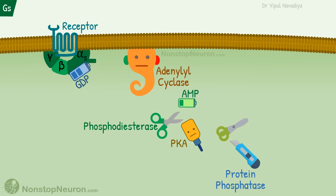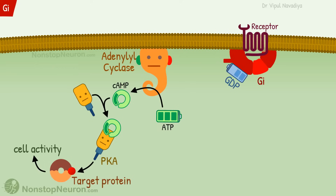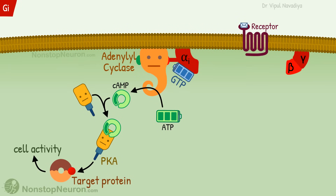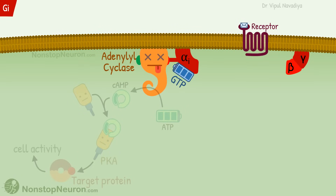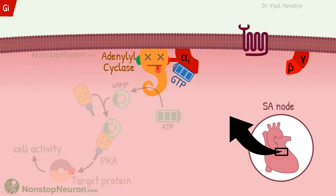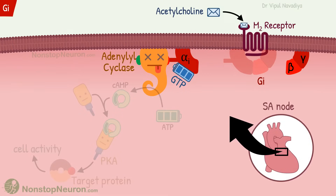Now let's talk about the Gi protein. It has an alpha-i and beta and gamma subunits. These subunits follow a similar path as Gs proteins — binding of ligand causes release of GDP, binding of GTP, and then dissociation of the alpha subunit. Now, instead of stimulating, alpha-i inhibits adenylyl cyclase. So all the things that were happening at a baseline rate stop happening, and the activity of the cell decreases. As an example, the SA node contains M2 receptors, which are Gi protein-coupled receptors. Acetylcholine activates this receptor and inhibits adenylyl cyclase activity, ultimately leading to decreased impulse generation and a fall in heart rate.